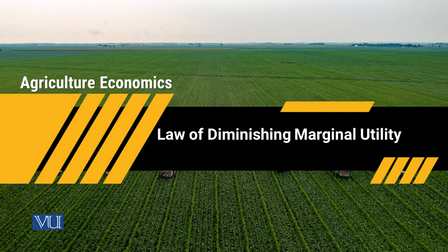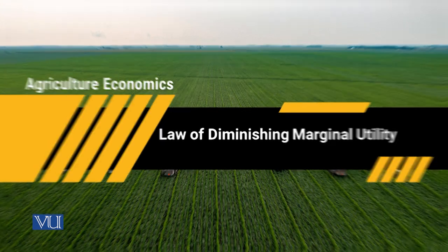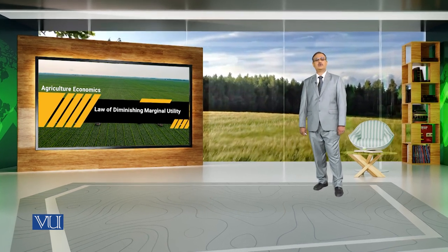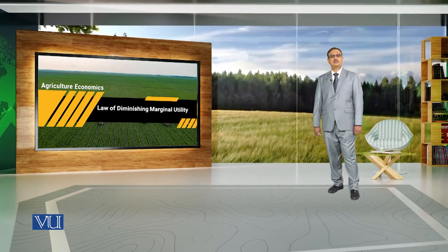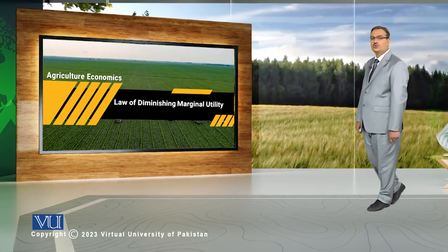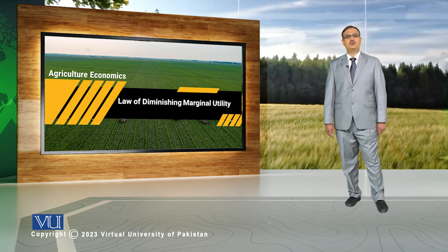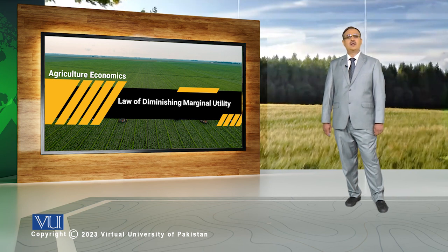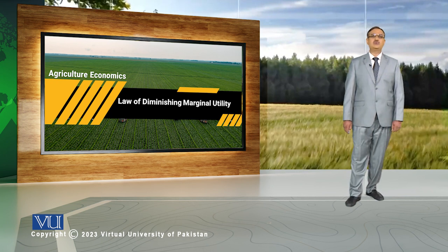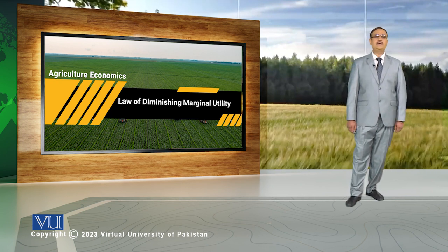Law of Diminishing Marginal Utility. Under marginal utility, we study change in utility because of change in consumption of a particular commodity. Marginal utility is an important concept in economics where we study increment in total utility because of the consumption of a particular commodity. But with reference to marginal utility, we always see the Law of Diminishing Marginal Utility operates.